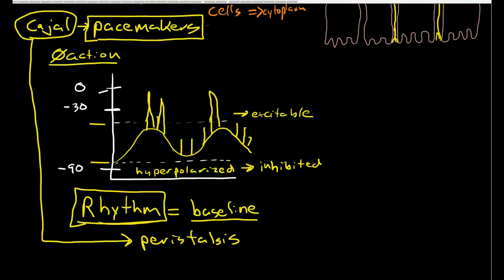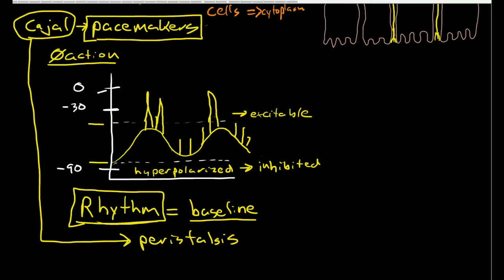Keep that in mind that there is this baseline rhythm, and then we're going to start talking about how the nervous system actually initiates the action potentials within this underlying rhythm that is set by the Cajal cells.